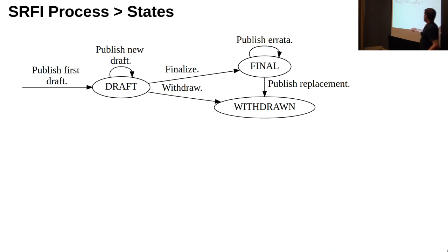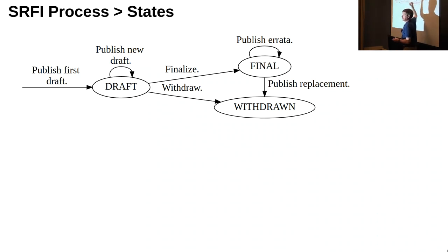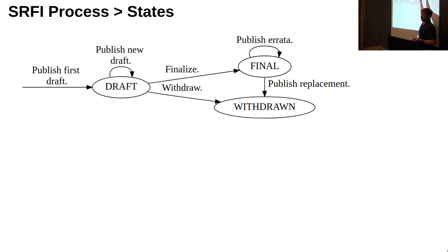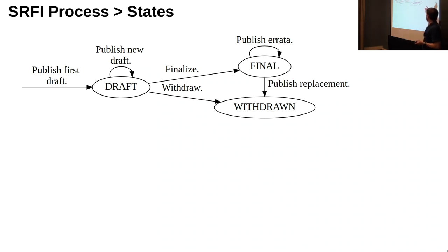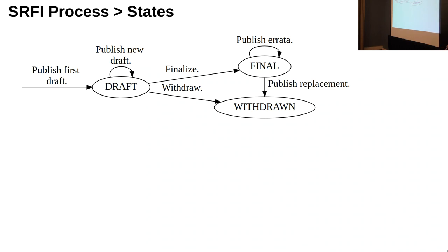When you publish it, we have a number of states your document can be in. Initially you go through drafts and can finalize it. Once in the final state, all you can do is publish errata — we only allow you to correct tiny mistakes like typos and contradictions, not design mistakes. Otherwise we treat it as a standard and leave it untouched. But if you, as the author, decide you have a new revised version, you can provide that, finalize it, and then withdraw the initial version.